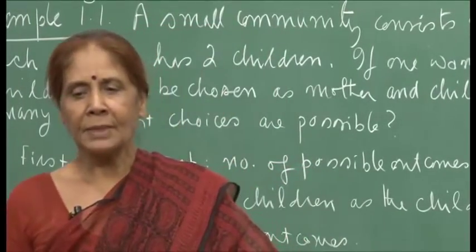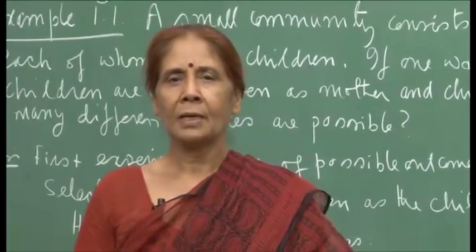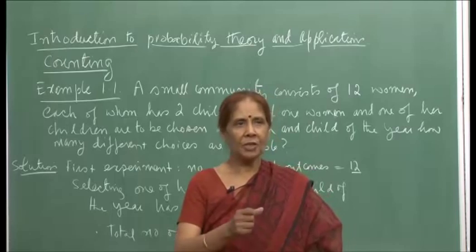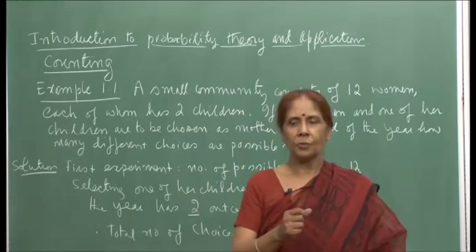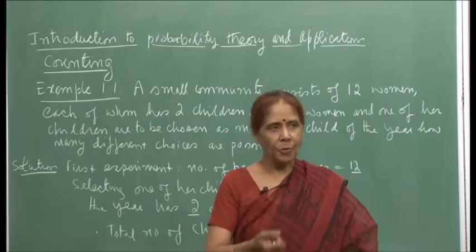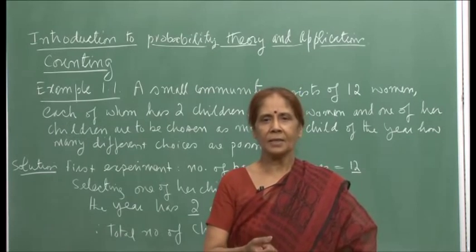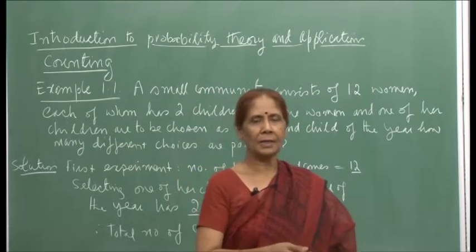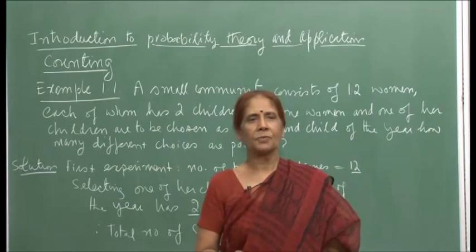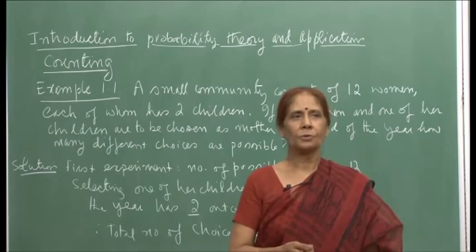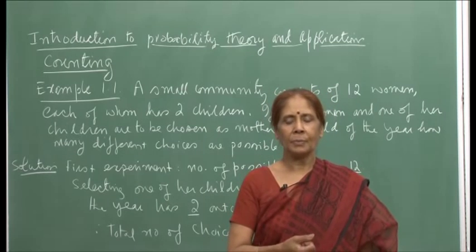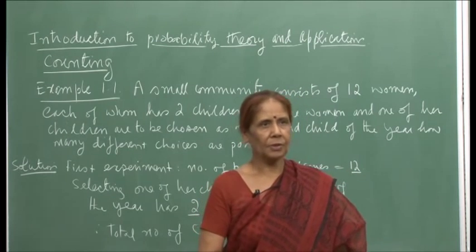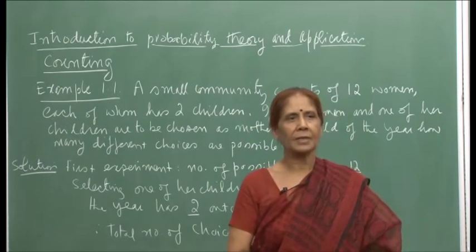Basically, probability theory is estimating the possibility of outcome of an event. This word possibility — how probable the event is — is actually done by counting. So before I start giving you the axioms of probability theory, I would like to begin with the basic concepts of counting, because that helps you in estimating the possibility of the occurrence of an event.